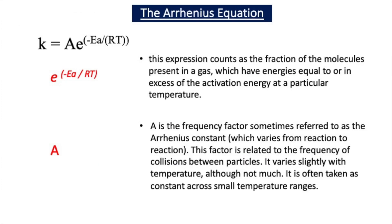In our previous videos we've looked at the rate equation and the Arrhenius equation. The Arrhenius equation can be written as k = Ae^(-Ea/RT), where k is the rate constant, A is the frequency factor which is related to the frequency of collisions between particles, Ea is the activation energy, R is the gas constant, and T is the temperature in Kelvin.